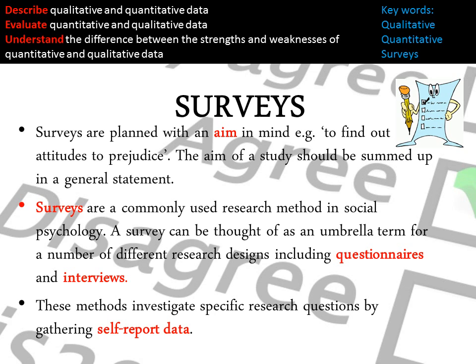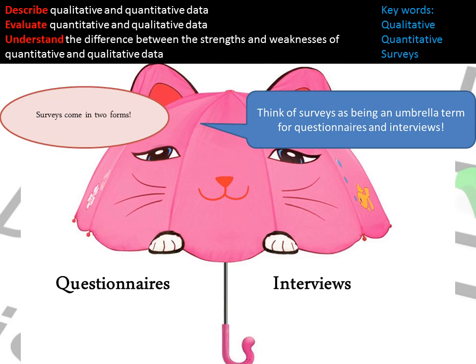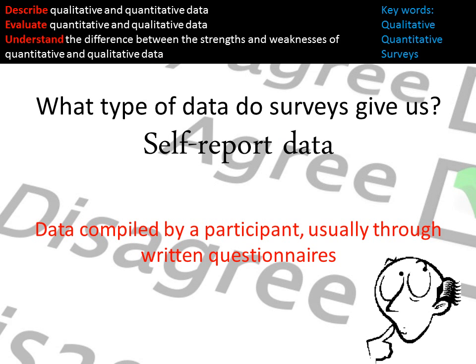Surveys are commonly used within social psychology and is used as a term for questionnaires and interviews. All three will always gain self-report data. Surveys are the umbrella, and the forms of surveys are questionnaires and interviews — they are both a type of survey. Self-report data is data compiled by the participant about themselves, usually through a written questionnaire.